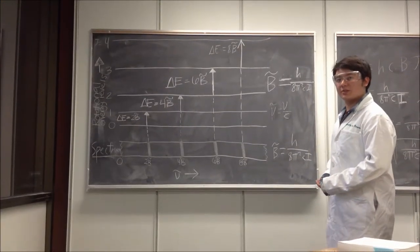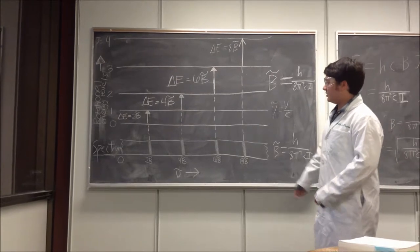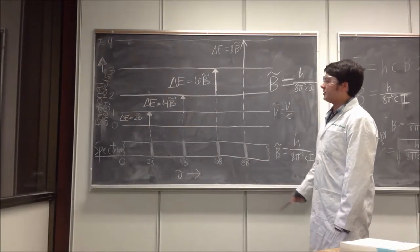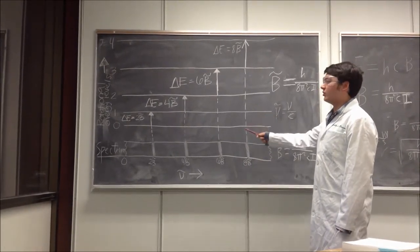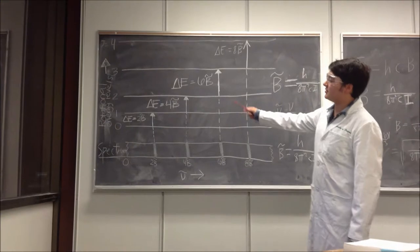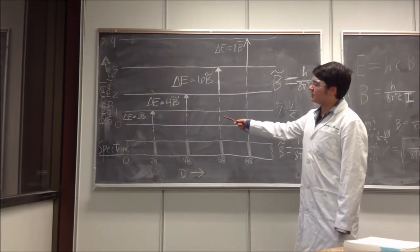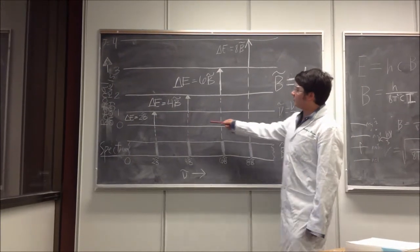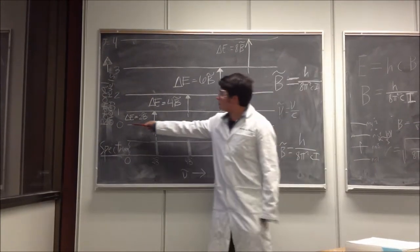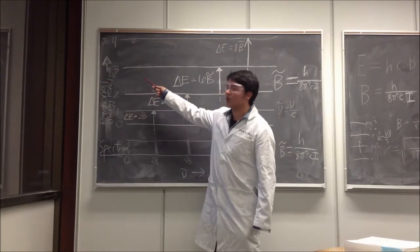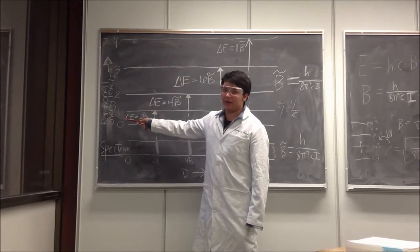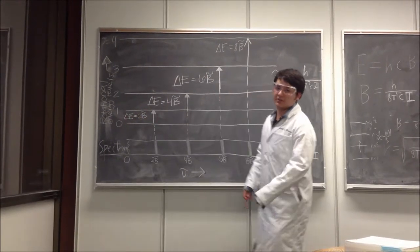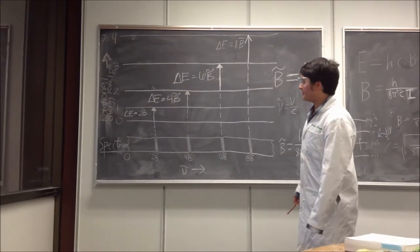We can relate the absorbance spectrum to this energy level diagram, where the y-axis is the rotational energy levels. Each level — 0, 1, 2, and so on — represents the J values, the angular momentum quantum numbers.